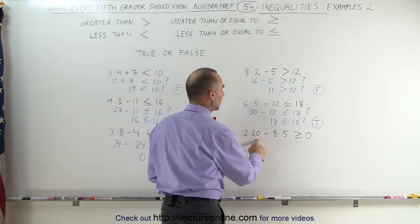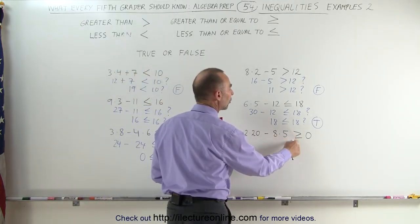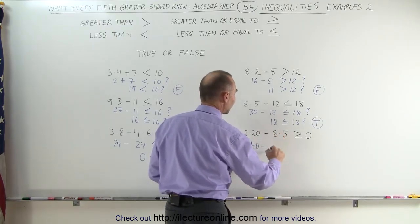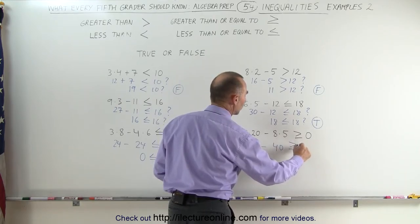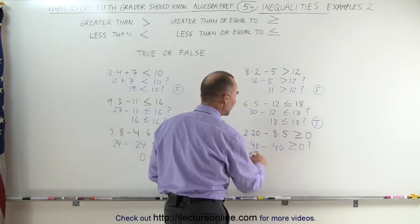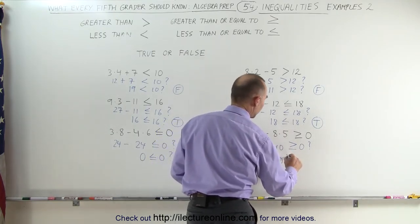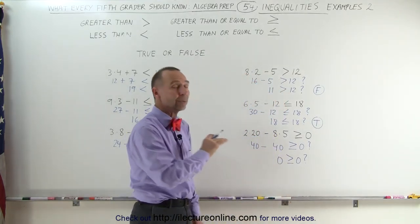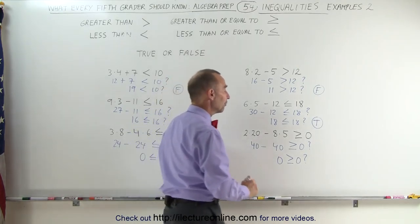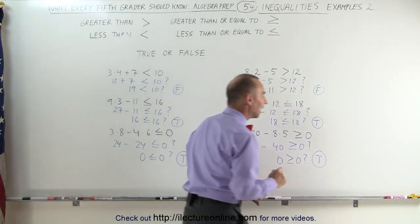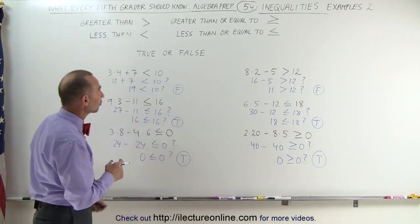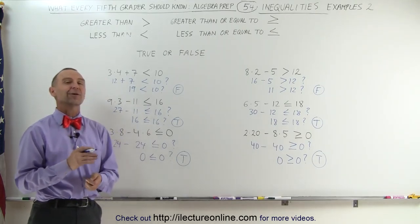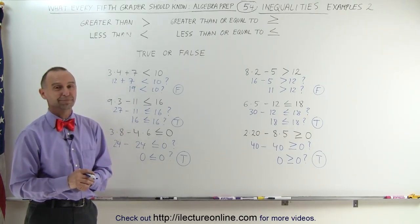Over here, 2 times 20 minus 8 times 5 — is that greater than or equal to 0? We know that 2 times 20 is 40, minus 8 times 5, which is 40. Is that greater than or equal to 0? 40 minus 40 is 0. Is 0 greater than or equal to 0? We know it's not greater than 0, but 0 equals 0 — it meets one of the two conditions. Therefore, this is a true statement. And that's how we utilize those expressions: greater than, less than, greater than or equal to, and less than or equal to.